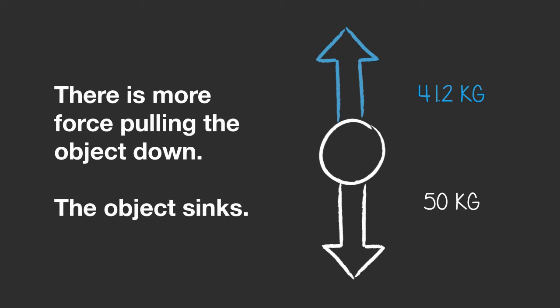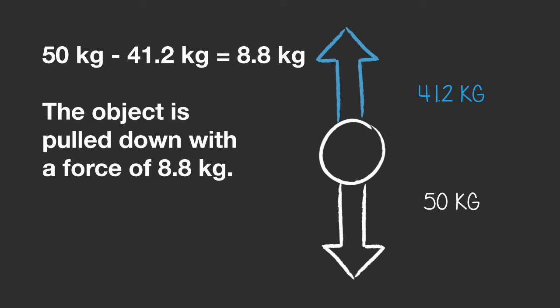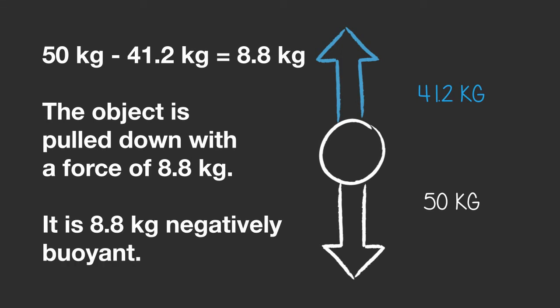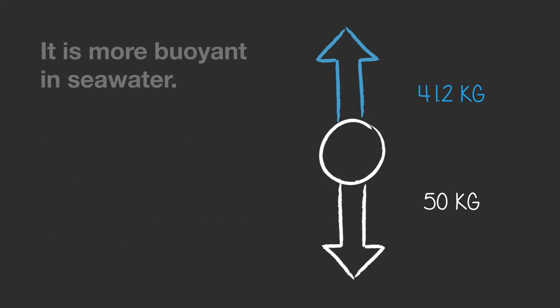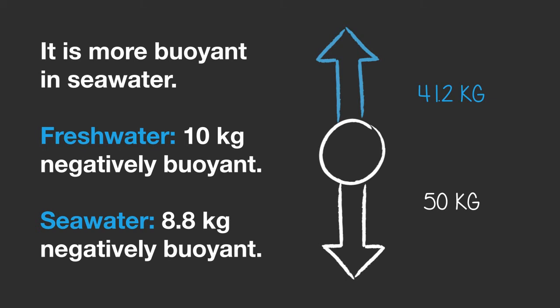We know 50 kg is going down, so the object sinks. But by how much? 50 kg minus 41.2 kg equals 8.8 kg. The object is being pulled down with a force of 8.8 kg — it is 8.8 kg negatively buoyant. And that makes sense: it is a little bit more buoyant in seawater than in freshwater. In freshwater the object was 10 kg negatively buoyant, and in seawater it's only 8.8 kg negatively buoyant.